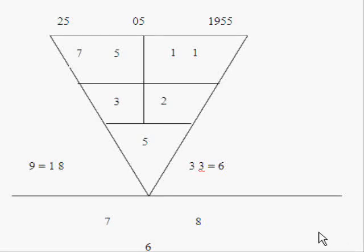Hi, I'm going to show you how to use the Pythagorean Triangle to calculate numbers based on your birthday. For example, I'm using a birthday which is May 25th, 1955, and this birth date is written on the base of the triangle. After you have written it down, then you add the two days together.